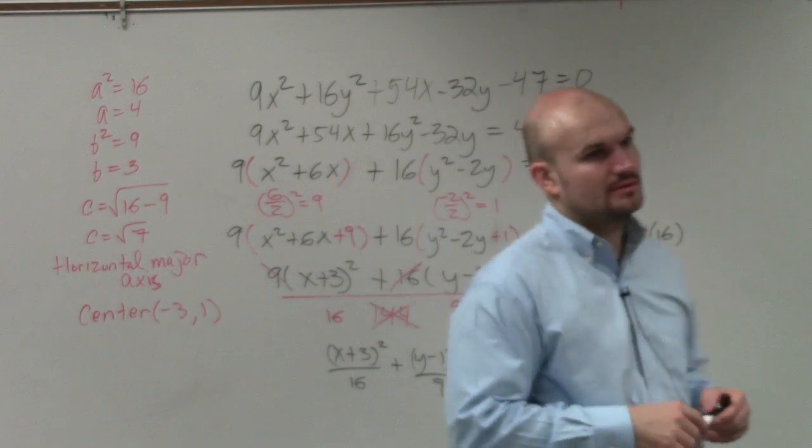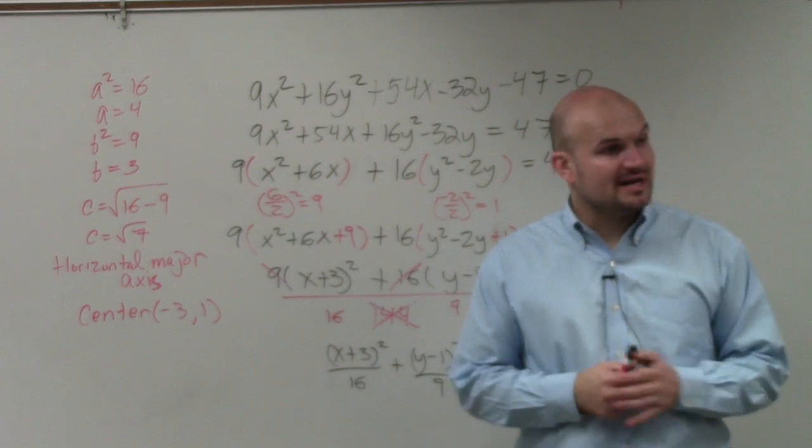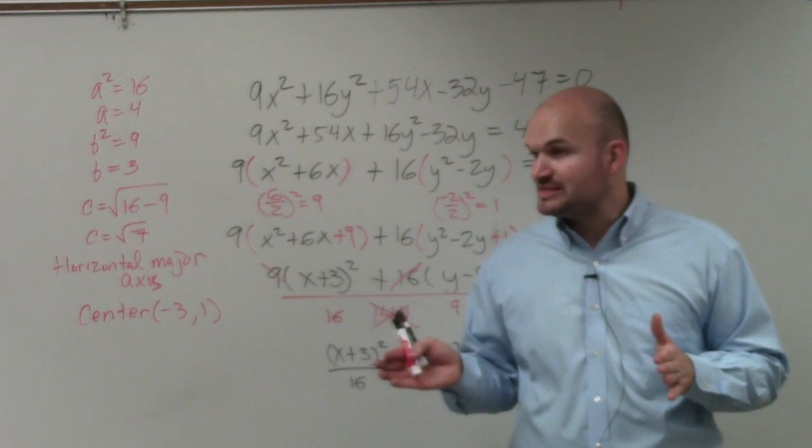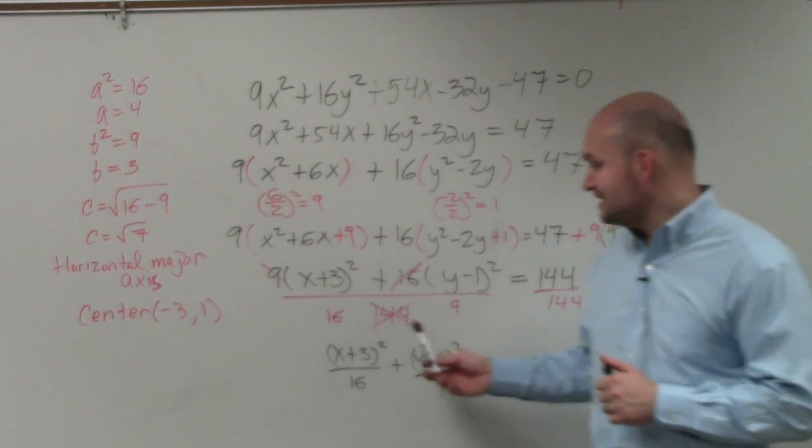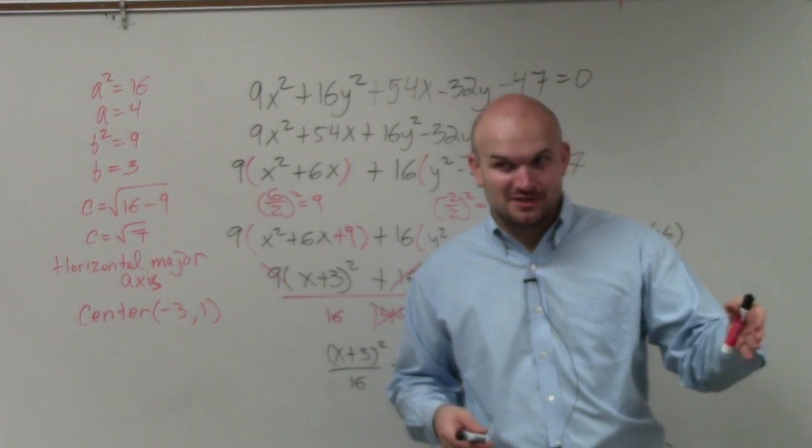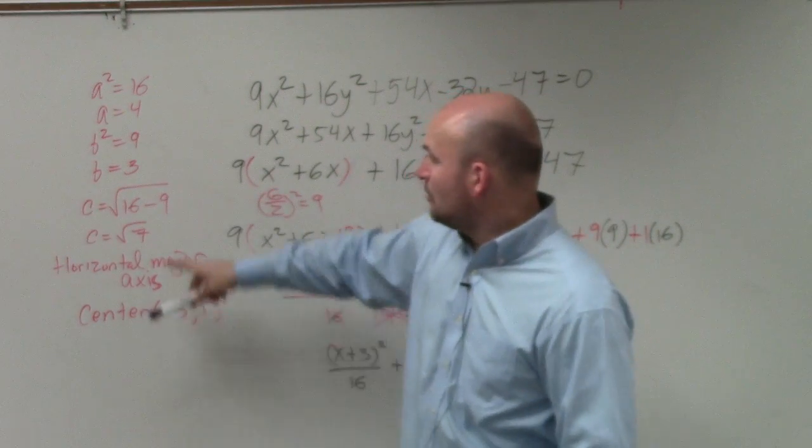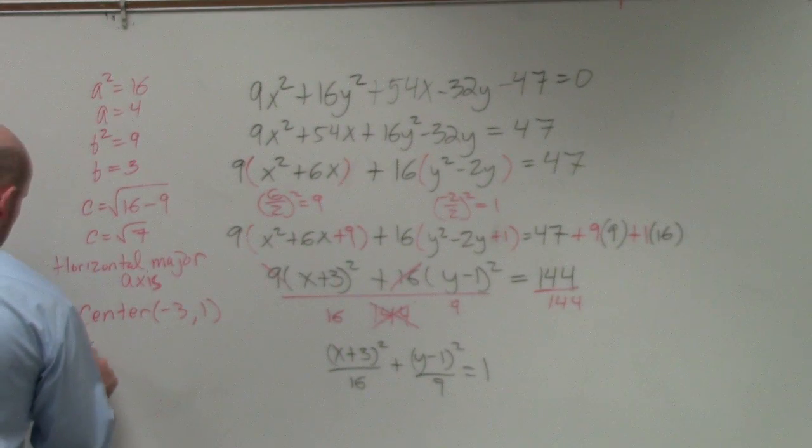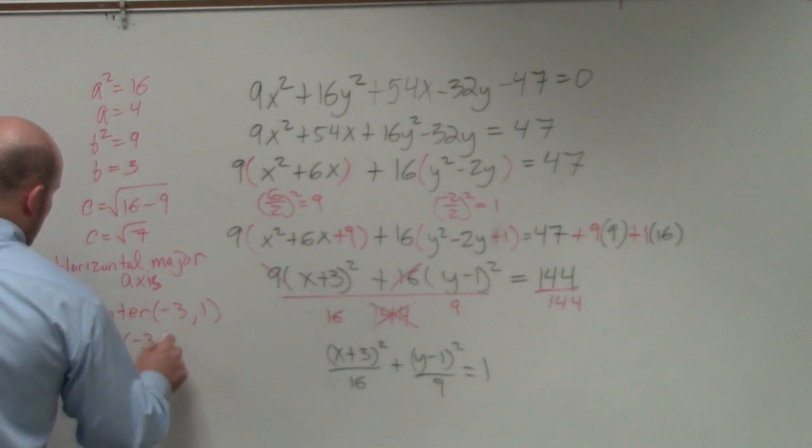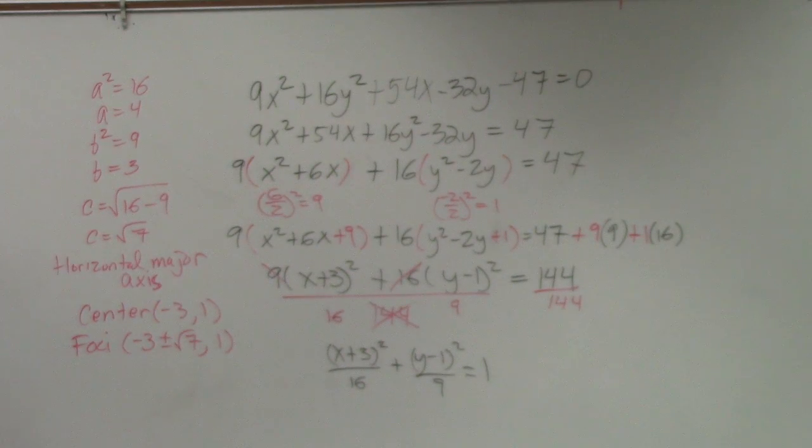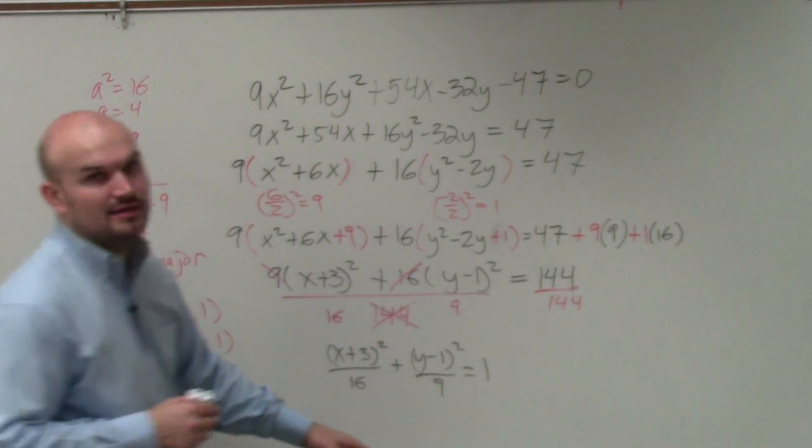For the foci, again, remember the foci lies on the major axis. So that's just shifting left and right from the center. So I'm just going to add and subtract the distance. What's the distance from the center to my foci? It's c. What was my value of c? Square root of 7. So you can just write it like this. I will accept this as an answer, because I don't like decimals. Negative 3 plus or minus the square root of 7 comma 1. That is an acceptable answer, because I do not like decimals, and I do not like you approximating your answers.